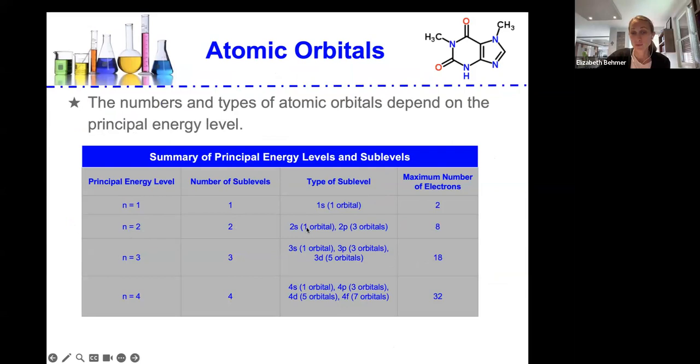So if we have a second level, we have two sub-levels, the 2s and the 2p sub-levels, where there will be one orbit in the 2s and three orbits in the 2p. And there are two electrons in each one of those orbitals. We have two in the second principal energy level.